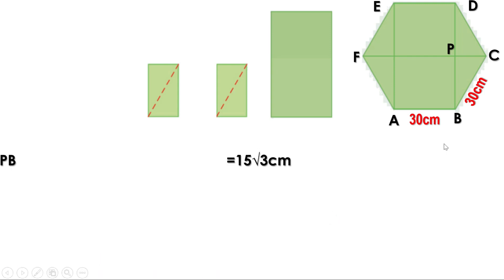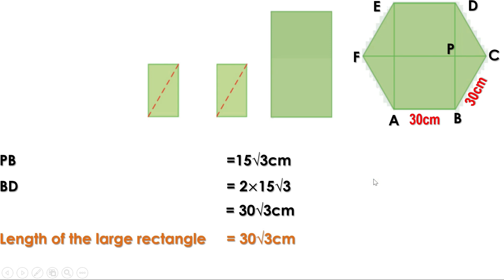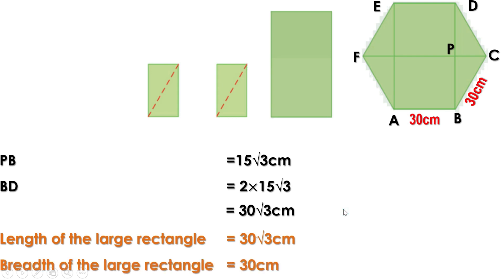We have PB = 15√3 centimeters, therefore PD is also equal to 15√3 centimeters, therefore BD = 2 × 15√3 = 30√3 centimeters. BD is the length of the large rectangle, so the length of the large rectangle is 30√3 centimeters. AB is the breadth of the large rectangle, so the breadth of the large rectangle is 30 centimeters.